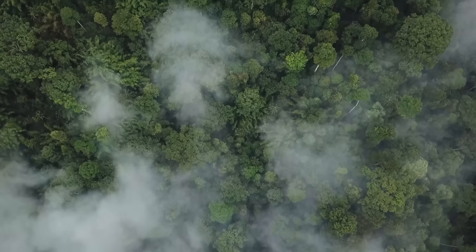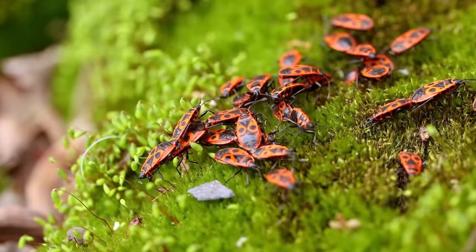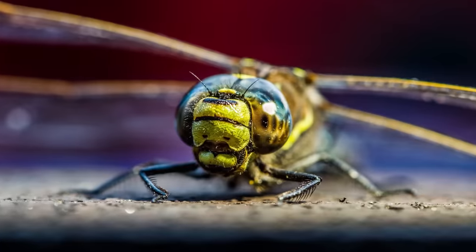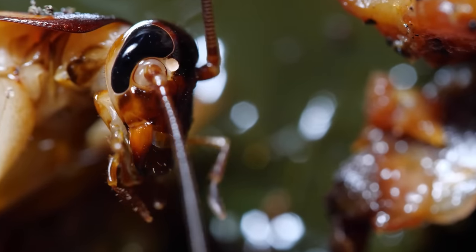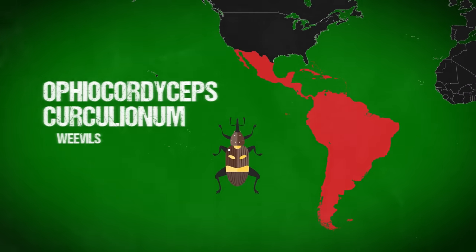No one knows exactly how many cordyceps species there are, but there are at least 600, and most target a single species of insect, anything from butterflies to dragonflies and cockroaches.